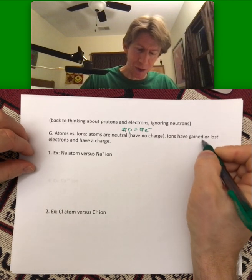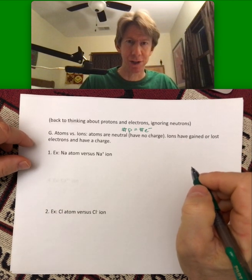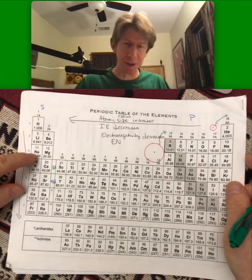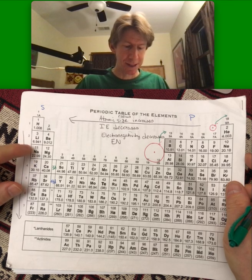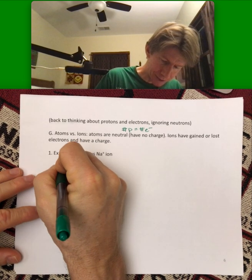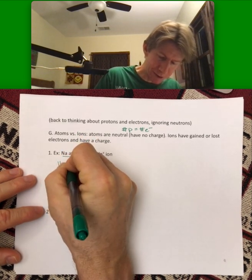Ions have gained or lost electrons and have a charge. And our first example is going to be sodium. So we go to our periodic table. It says sodium right here is Na. It's got 11 protons. So this is for the sodium atom, 11 protons.